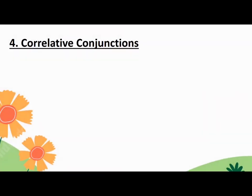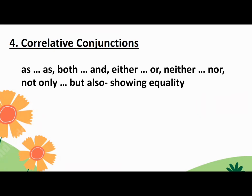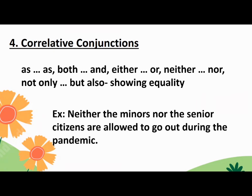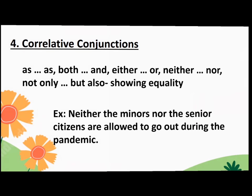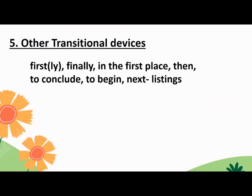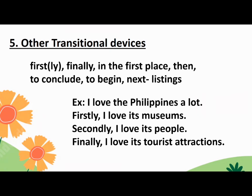The fourth type of transitional signals is correlative conjunctions. These are conjunctions that always appear in pairs: As...as, Both...and, Either...or, Neither...nor, Not only...but also. They are used for showing equality. Example: Neither the minors nor the senior citizens are allowed to go out during the pandemic. There are also other transitional devices like: First/Firstly, Finally, In the first place, Then, To conclude, To begin, Next. They are used to show listings. Example: I love the Philippines a lot. Firstly, I love its museums. Secondly, I love its people. Finally, I love its tourist attractions.